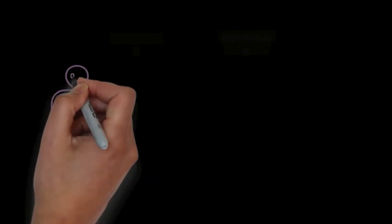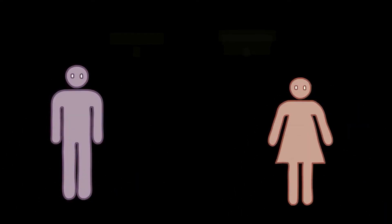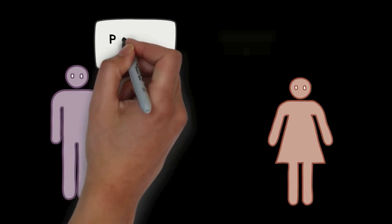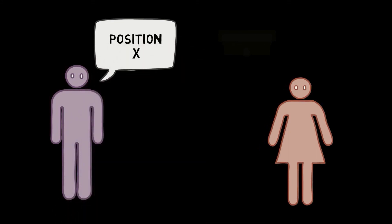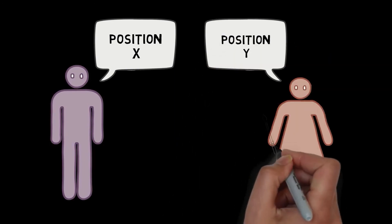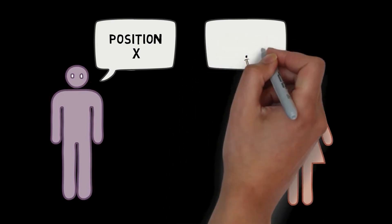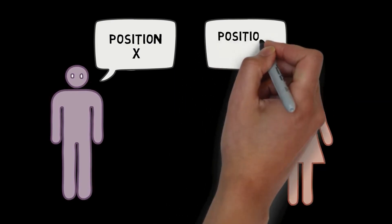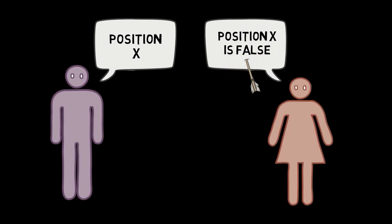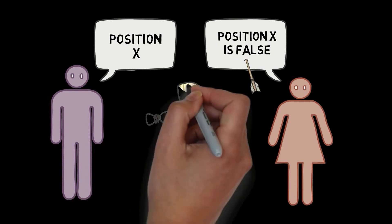The general structure of straw man fallacies goes like this: First, person 1 advances position X. Second, person 2 presents a distorted version of position X — let's call this position Y. Third, person 2 attacks position Y. And fourth, person 2 concludes that position X is false. In the straw man fallacy we've just considered, the original view was exaggerated to a very extreme view and then attacked.